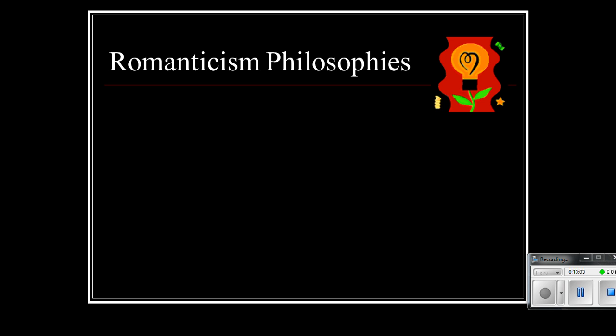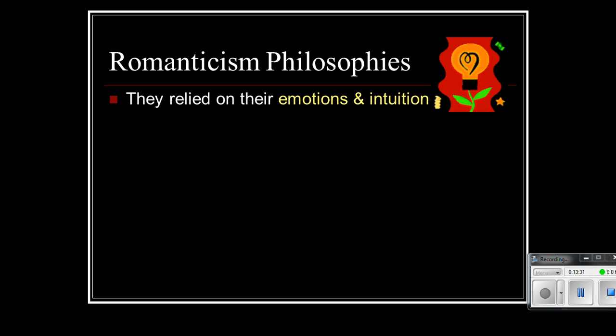These are the philosophies of romanticism, and they're quite important for us to write down. Romanticists relied on their emotions and on intuition, which is very different than what the Puritans relied on. The Puritans relied on God and devotional literature in the Bible. Romanticists reacted by going the opposite way and relying on their emotions and their intuition — really, how do they feel about something, what's their hunch, what's their gut feeling. They also had an attitude of excess. Whereas the Puritans limited themselves and abstained from many activities, romanticists liked to explore going over the top and what would happen when you did that.